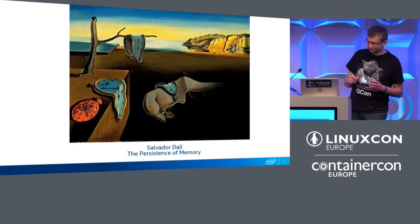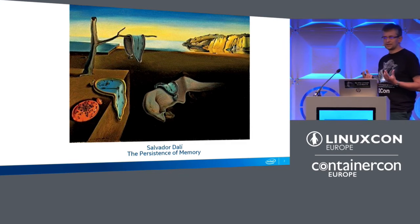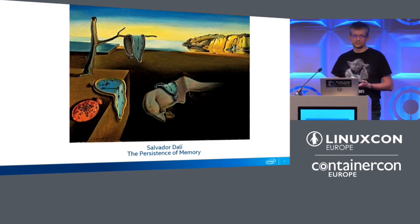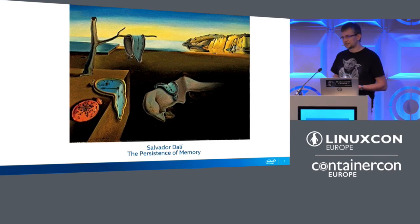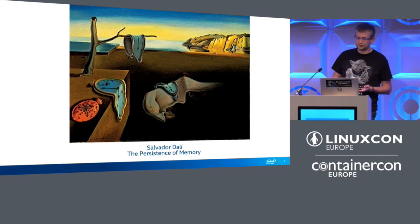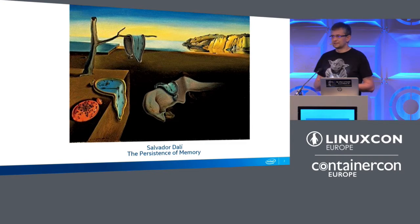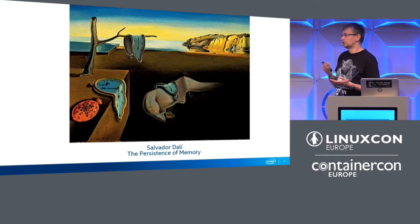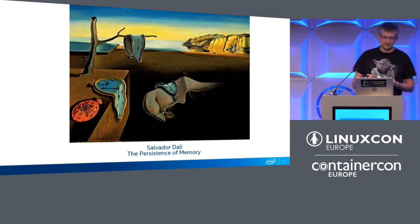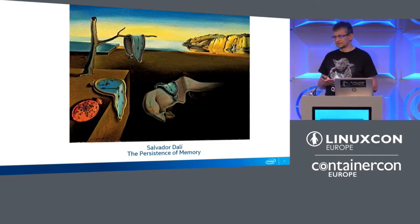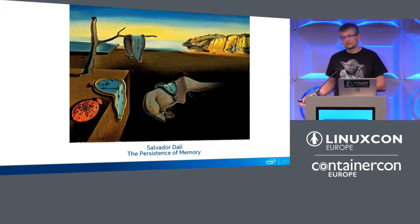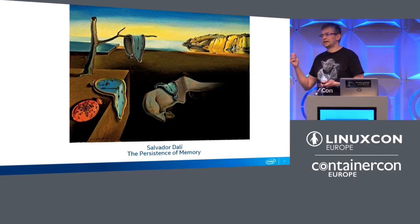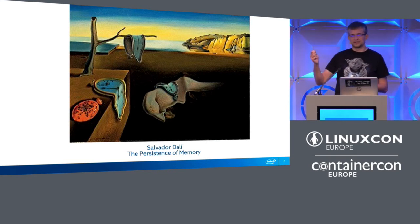So, persistent memory. We all know how a DIMM looks, right? DIMM form factor — a small piece that goes to the motherboard. Normally it hosts DRAM memory. In this case, we are talking about DRAM-like chips that can also retain the data upon power cycles. So if your machine goes out, crashes, whatever happens, you take the DIMM out — a non-volatile DIMM — and it contains all your data there.